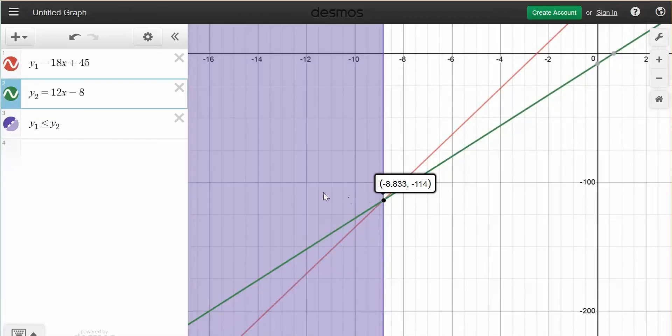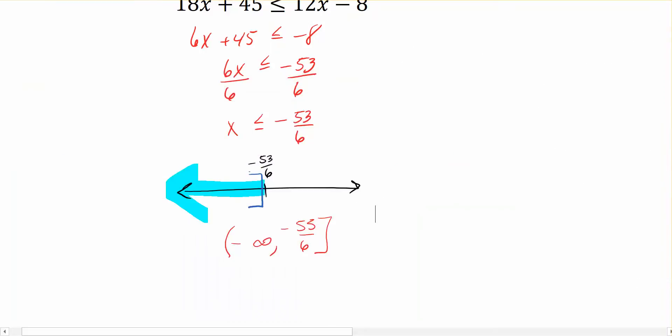And my inequality symbol says, well, all values then that fall to the left of that, or fall below that, are solutions for this particular linear inequality. So that's kind of a visual of what we have going on.